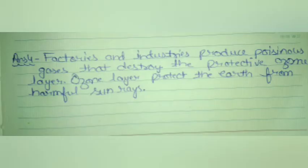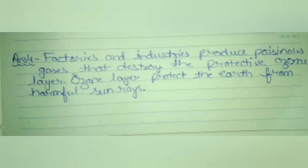Question 4: How do factories and industries contribute to global warming? Answer: Factories and industries produce poisonous gases that destroy the protective ozone layer. The ozone layer protects the earth from harmful sun rays.